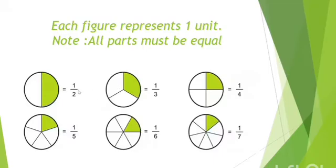Here 1 is number of shaded parts and 2 is total number of equal parts of a circle. In second figure, circle is divided into 3 equal parts. 1 is shaded. So fraction is 1 third.